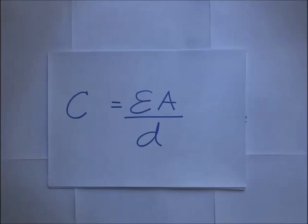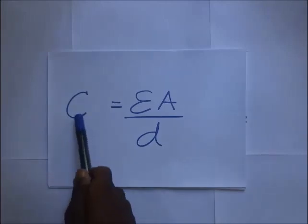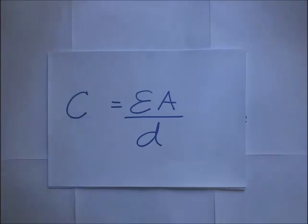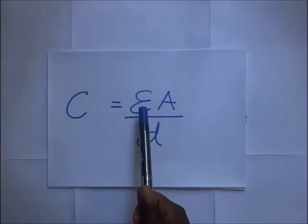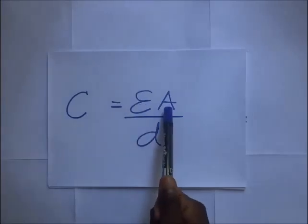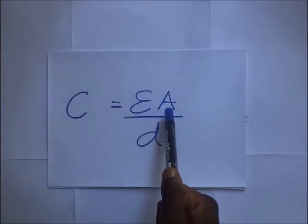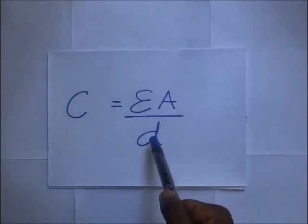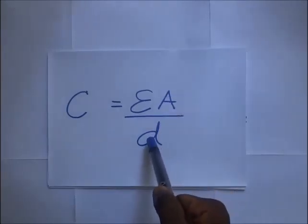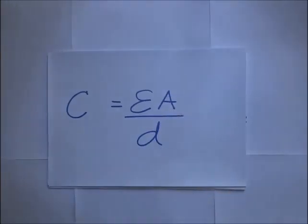The formula you're seeing on your screen is used when we are trying to find the capacitance of a parallel plate capacitor. We said that capacitance of a parallel plate capacitor is equivalent to the permittivity multiplied by the cross-sectional area of the plates, divided by the distance between the two plates.